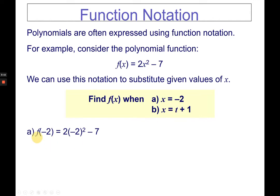Here's the work for problem A. If x is negative 2, the x in the function becomes negative 2. Negative 2 squared is 4, 4 times 2 is 8, and 8 minus 7 is 1.